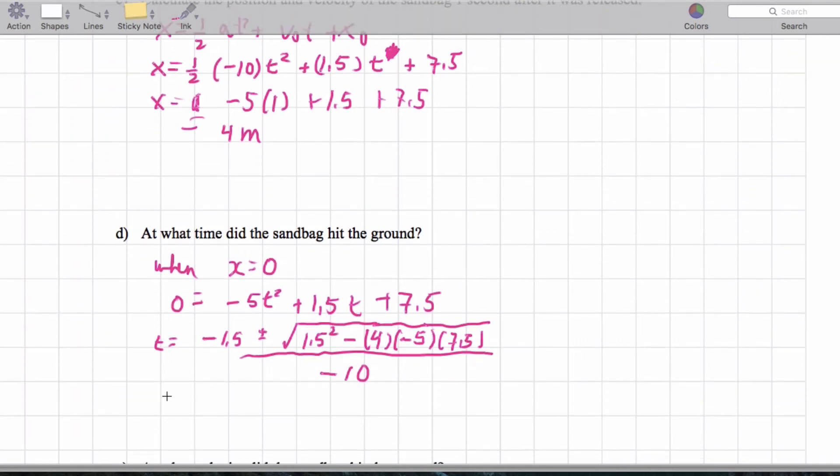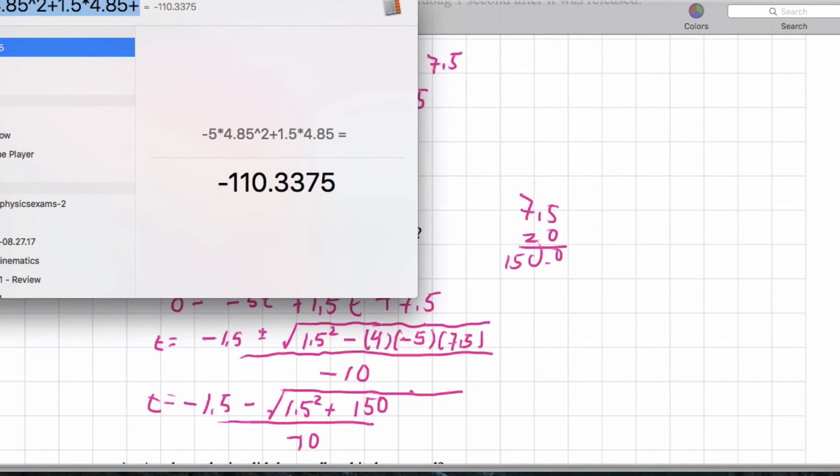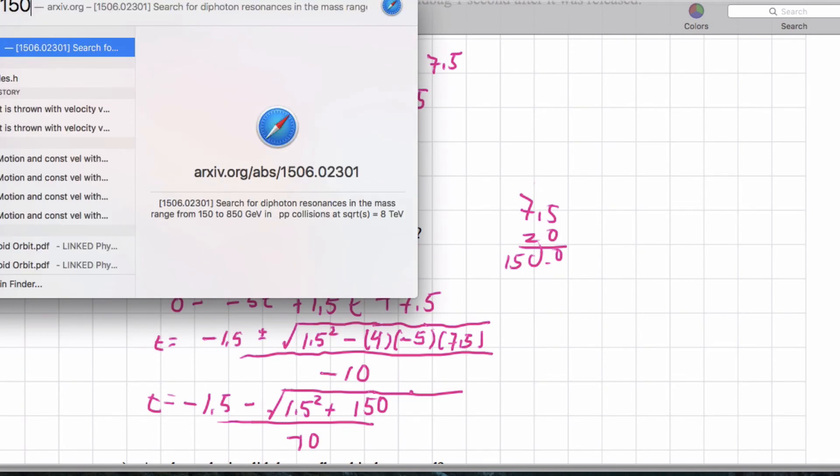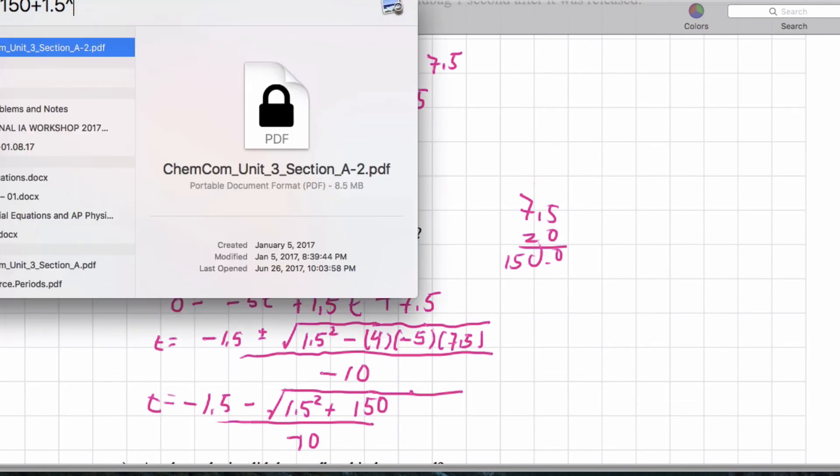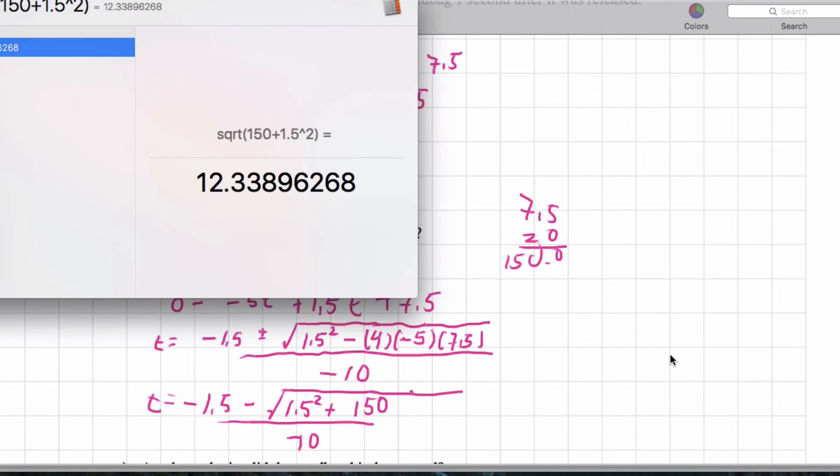So our answer for time, time is going to be negative 1.5 minus the square root of, here, 1.5 squared plus 4 times 5 is 20 times 7.5, right? That's going to end up being 150, all over negative 10.